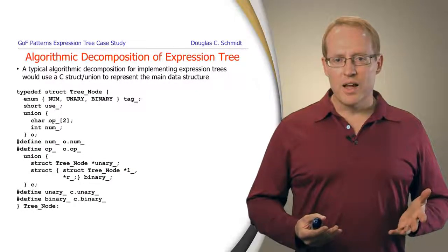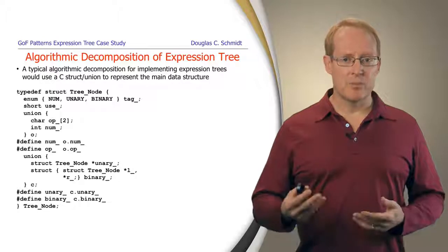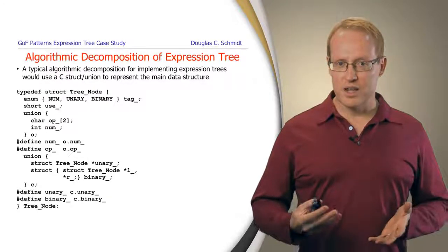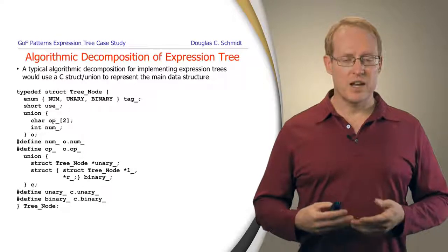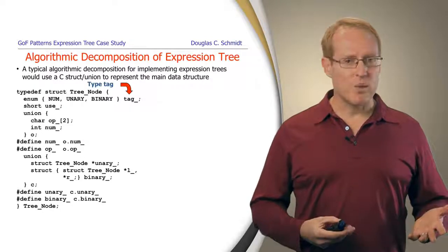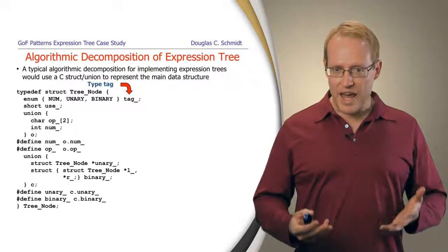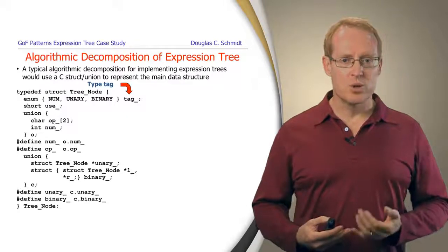So here's an example of how we might design the data structure in an algorithmic decomposition. A common way of doing this in a language like C is to use some kind of struct containing some unions. So, for example, here we have a tree node struct that contains a type tag to represent different kinds of nodes in the tree.